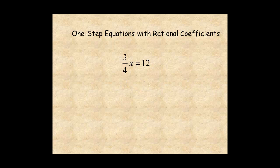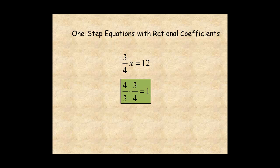To solve an equation with a coefficient that's a fraction, multiply both sides by the inverse of the coefficient. Remember, when you multiply a number by its inverse, you get 1.